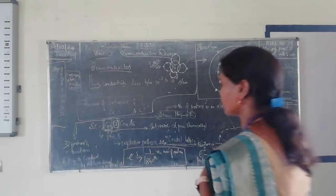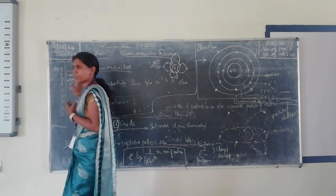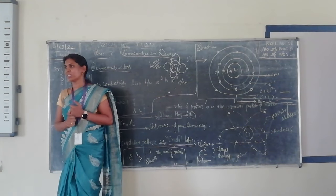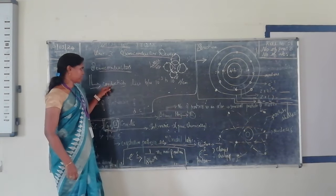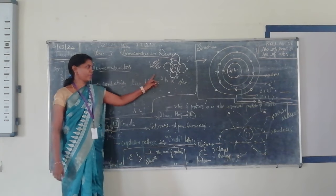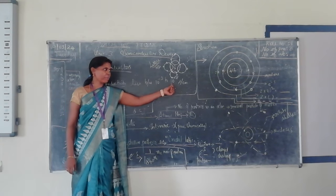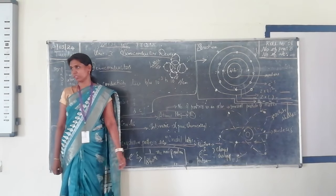Let me proceed with the lecture. For semiconductors, the name itself indicates semi, meaning partially conducting. We observe that the conductivity lies between 10 to the power minus 3 to 10 to the power minus 8 ohm per centimeter.